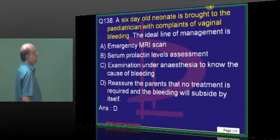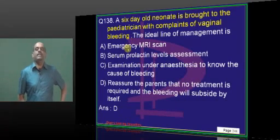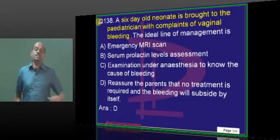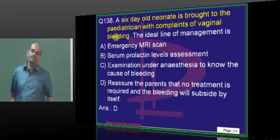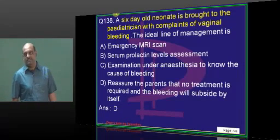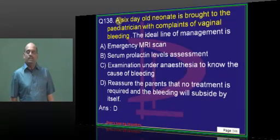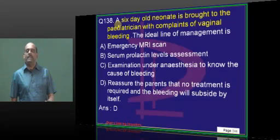A 6-day-old infant is brought with vaginal bleeding. Findings like Epstein pearls and seborrheic keratosis are normal findings in a newborn baby. Every time, one question comes in paediatrics on this.